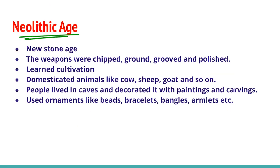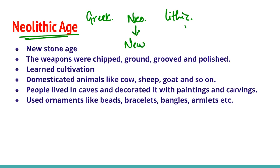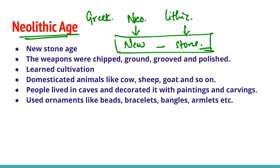The word Neolithic is derived from the Greek words Neo and Lithic. Neo means 'new' and lithic means 'stone,' so Neolithic age means New Stone Age. According to the world context, this New Stone Age began very early, around 7,000 BC, but Neolithic settlements in our Indian subcontinent are not older than 6,000 BC.